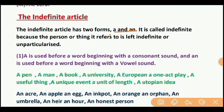First, we see the indefinite article. The indefinite article has two forms: A and AN. It is called indefinite because the person or thing it refers to is left indefinite or unparticularized.